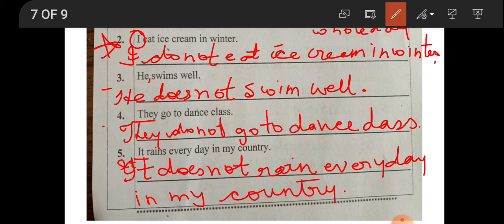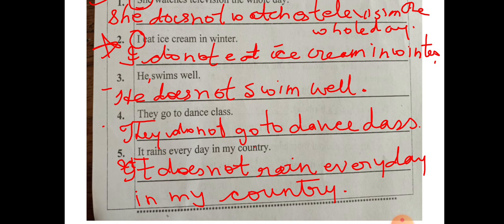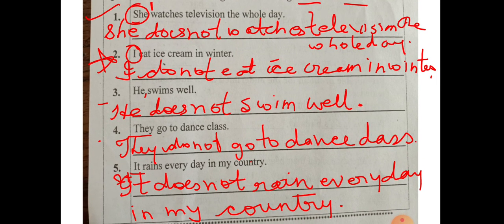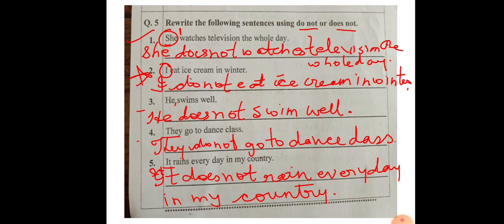To summarize: if talking about one person or noun, use 'does not'. If talking about more than one, use 'they do not'. And 'I' is exceptional — even though singular, 'I' always takes 'do not', never 'does not'. That's all for today. Please listen two or three times, try to understand, and complete your worksheet.